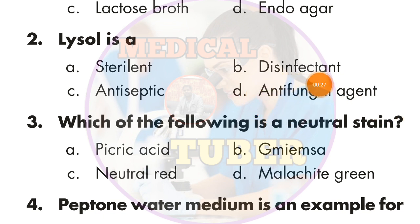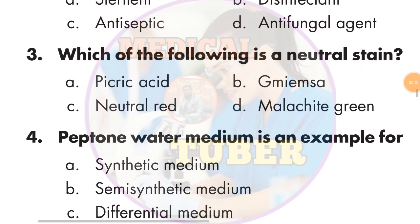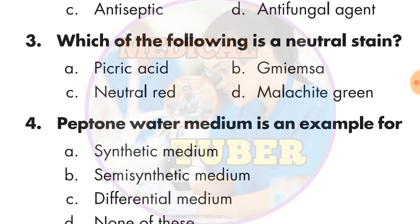Next question: Lysol is a — the answer is B — disinfectant. Question number 3: Which of the following is a natural stain? The answer is C — natural red.